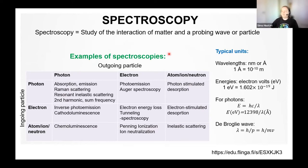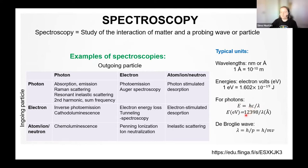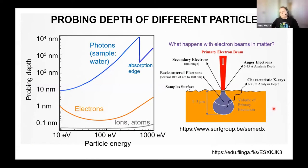A note on units: when working with spectroscopy, wavelengths and distances are in nanometers or Ångströms, and energy is typically expressed in electron volts. For photons, to convert wavelength to electron volts, we use a formula where Planck's constant times the speed of light gives a numerical factor — if energies are in electron volts and wavelengths in Ångströms, this conversion factor is very useful. For particles, one can also use the de Broglie wavelength.